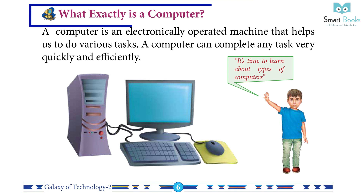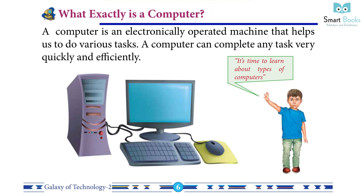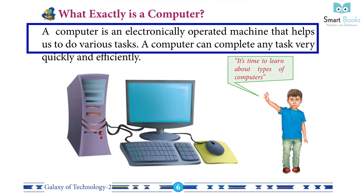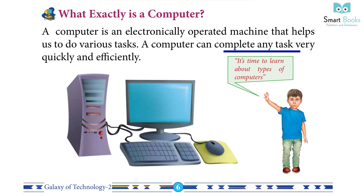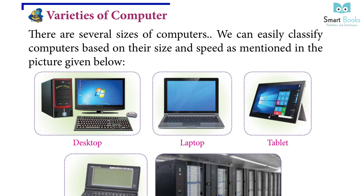What exactly is a computer? A computer is an electronically operated machine that helps us to do various tasks. A computer can complete any task very quickly and efficiently. It's time to learn about types of computers — the varieties of computer.